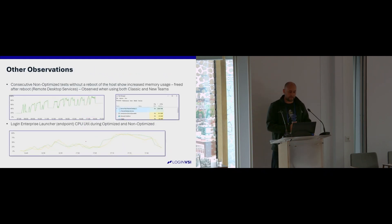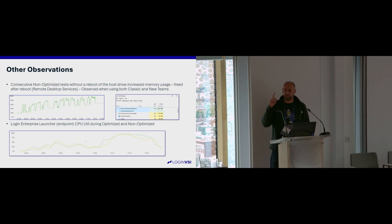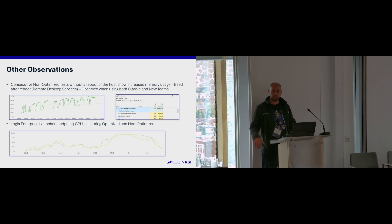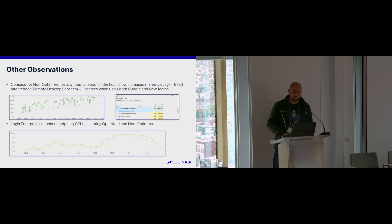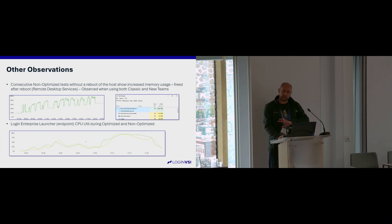A few observations from the non-optimized test: we saw a strange pattern where every time a user joined a call, it ate up a load of memory and never returned it. Every person joining a call continuously consumed memory. So if your VMs randomly die and you don't understand why, it may well be non-optimized calls eating up memory over time until there's none left and the machine dies. That has been reported back to Microsoft, so the Teams team are aware of it.